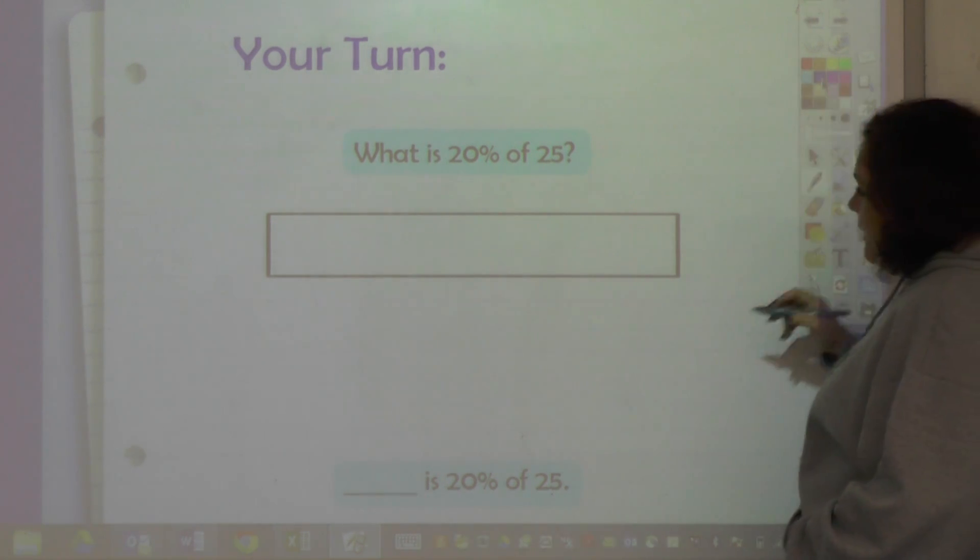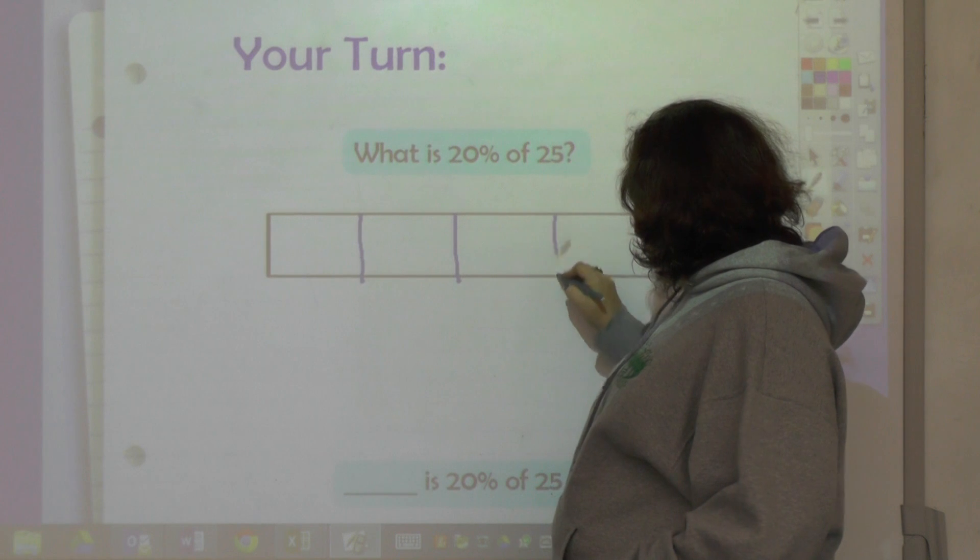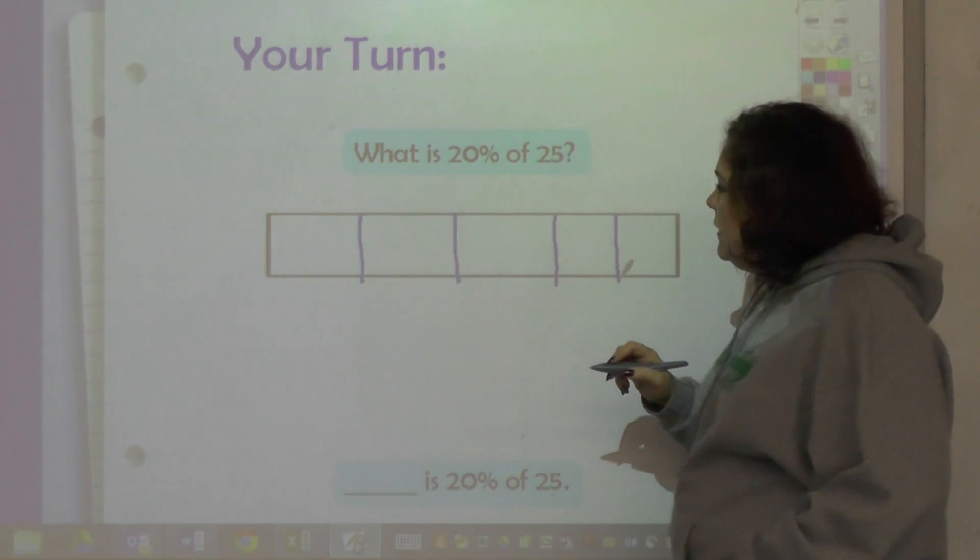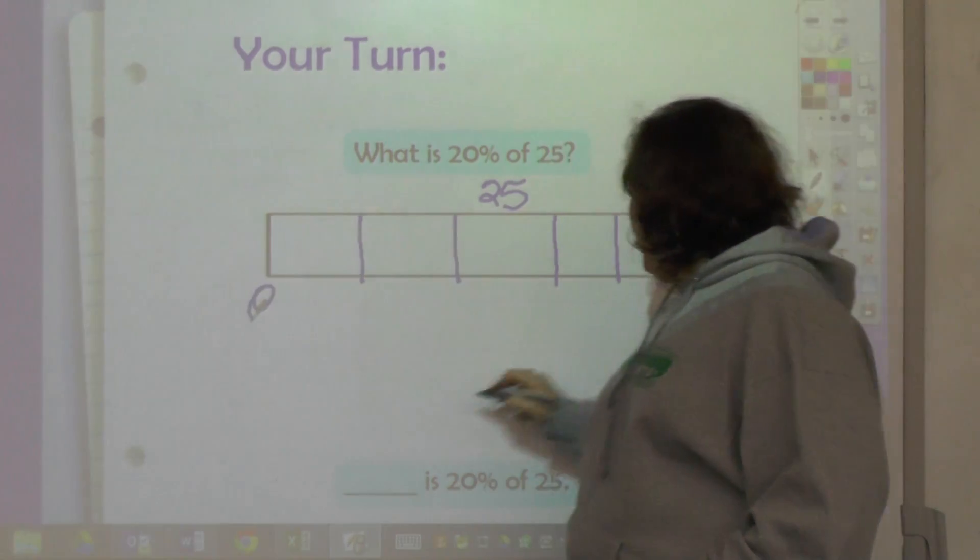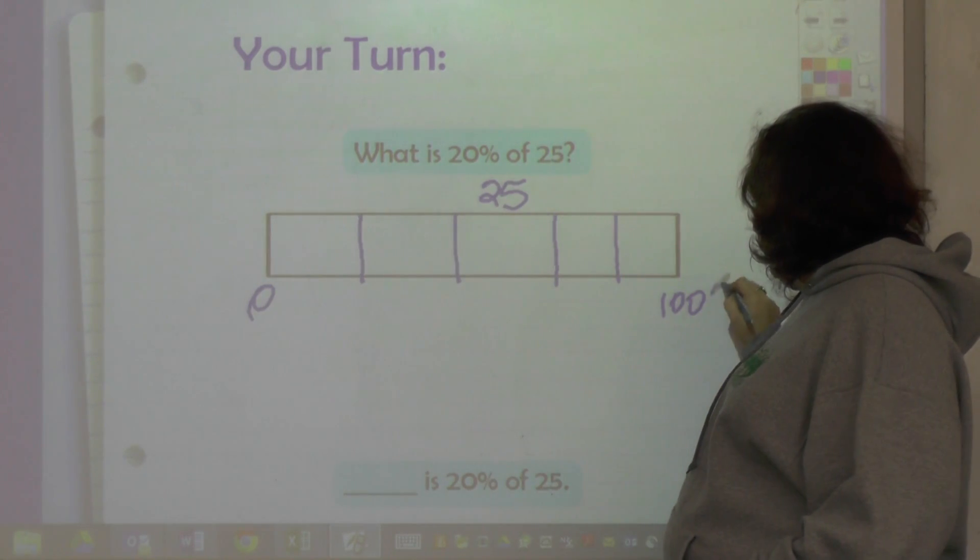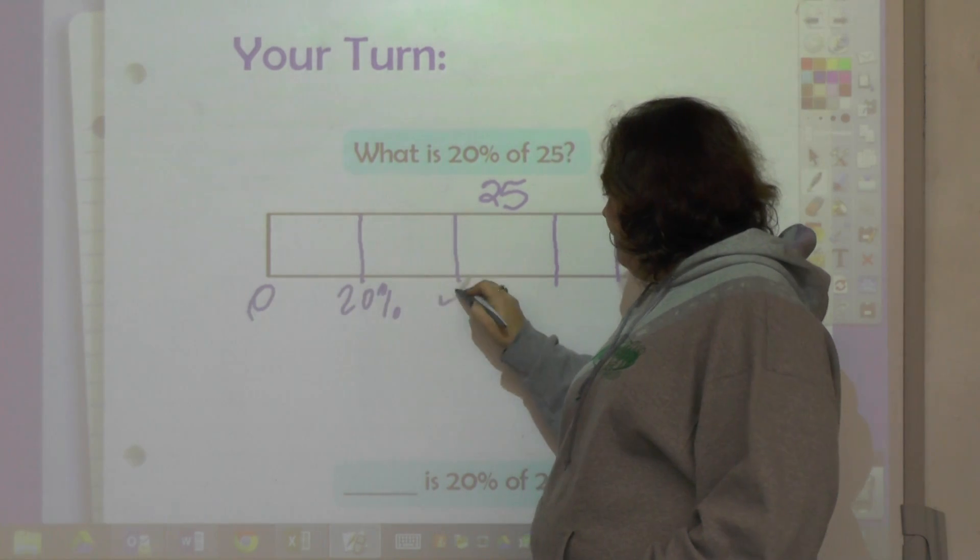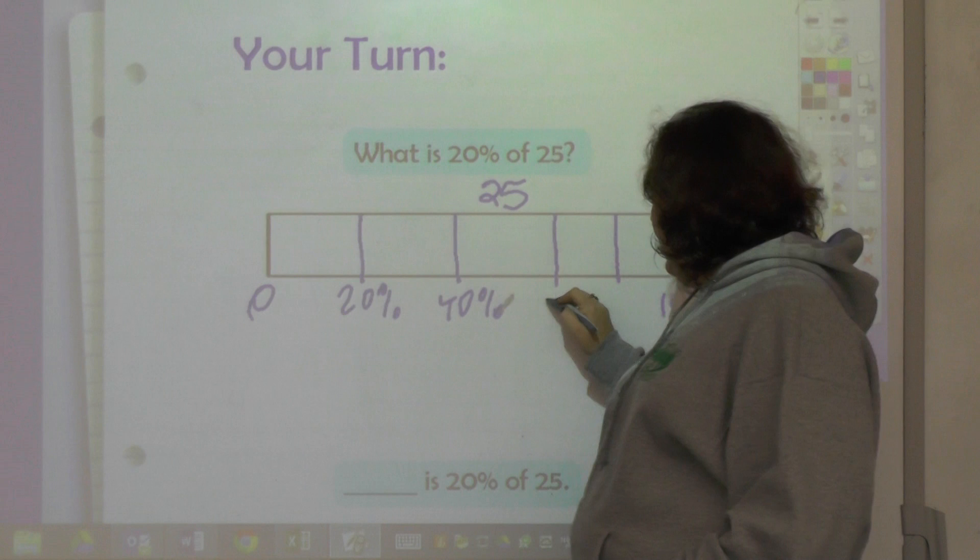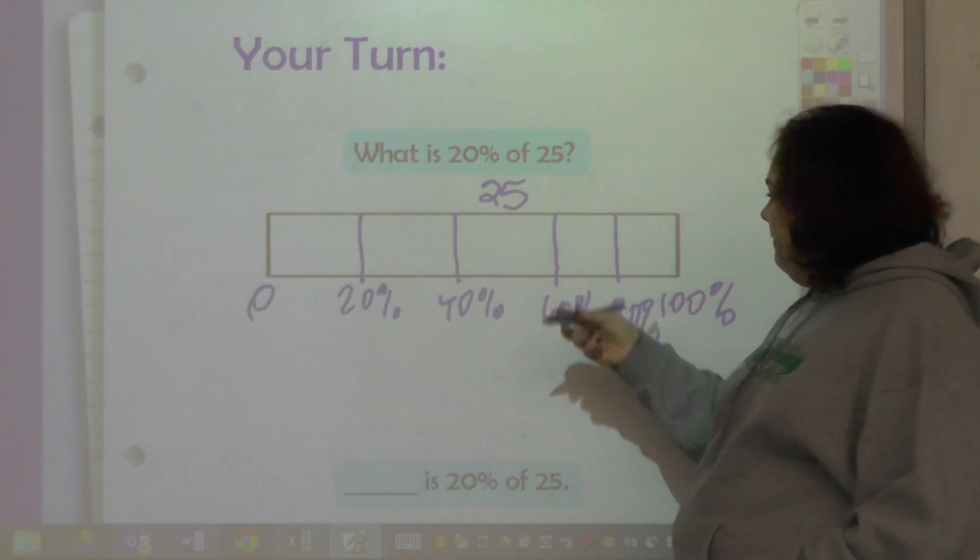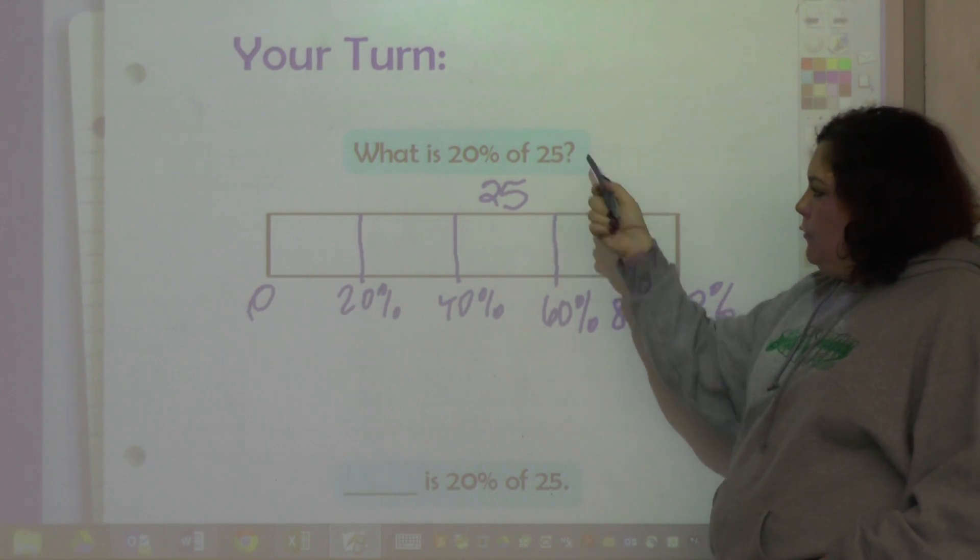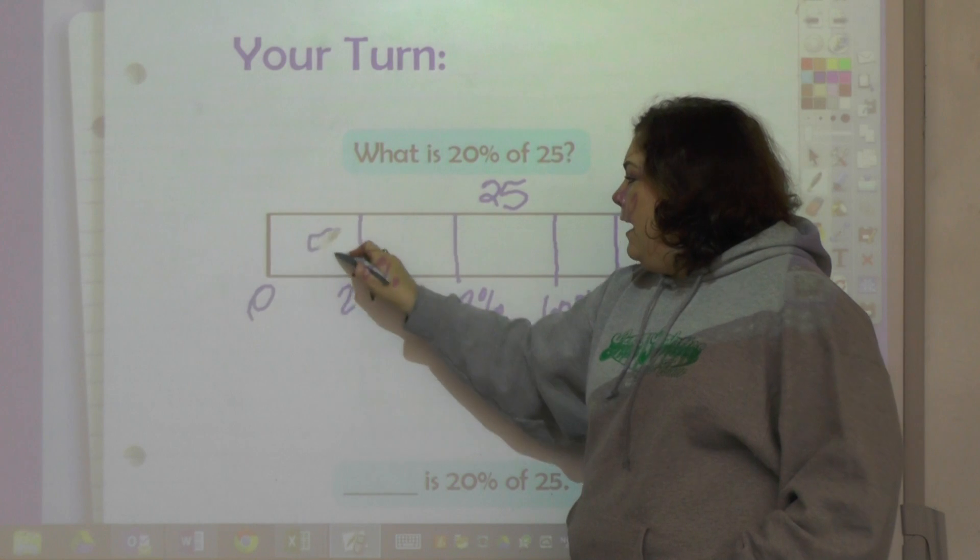Okay, so I'm going to separate this bar into fifths - five parts. And this whole thing is 25, and so this is zero and this is 100%. And this is 20%, and 40%, and 60%, and 80%. And it's in five parts, so 25 divided by five parts would be five each.